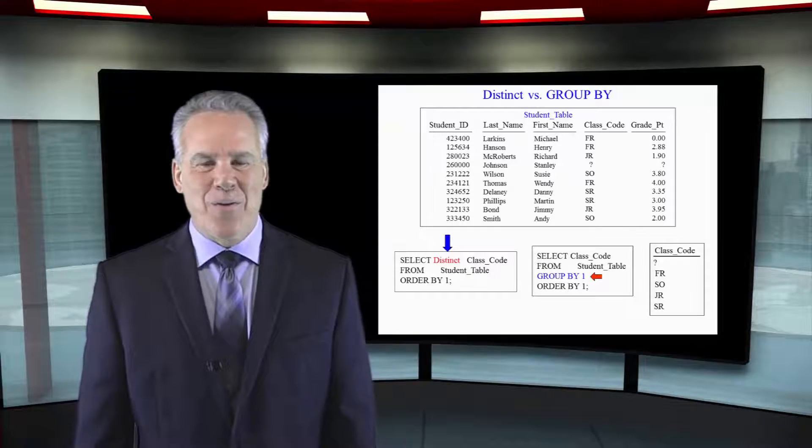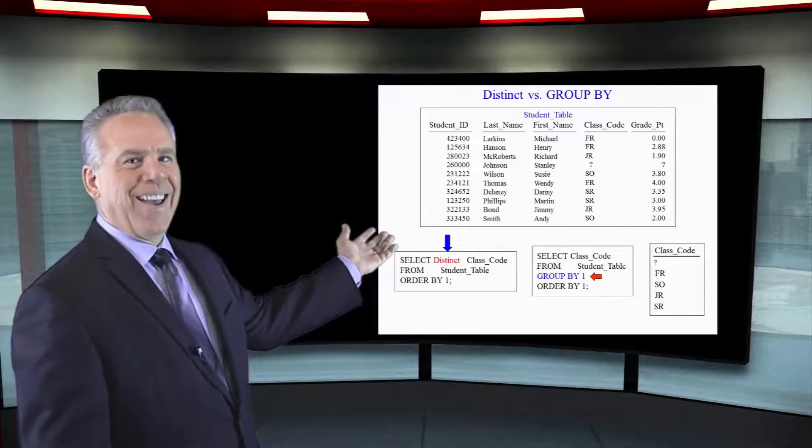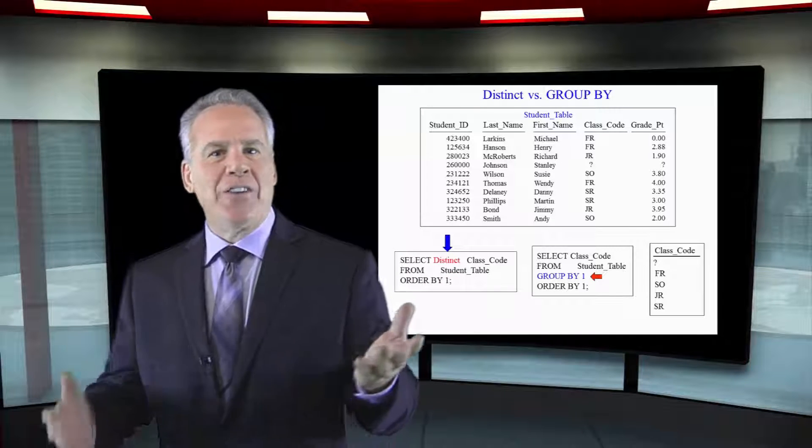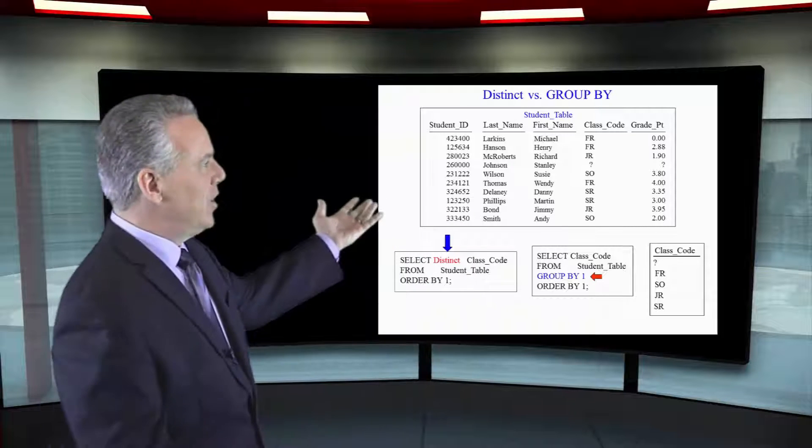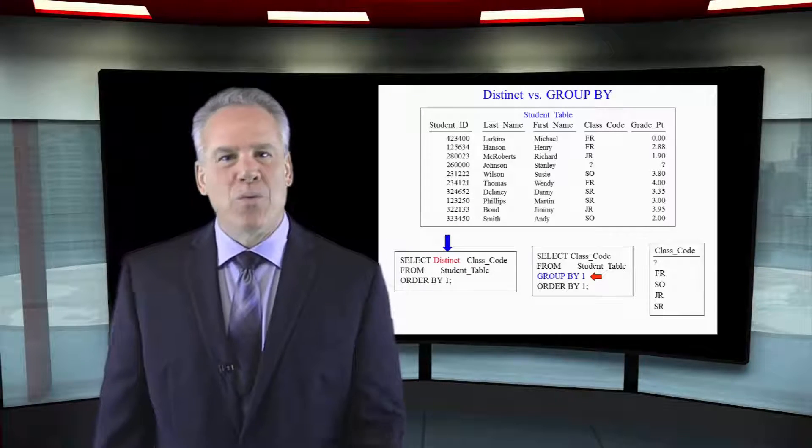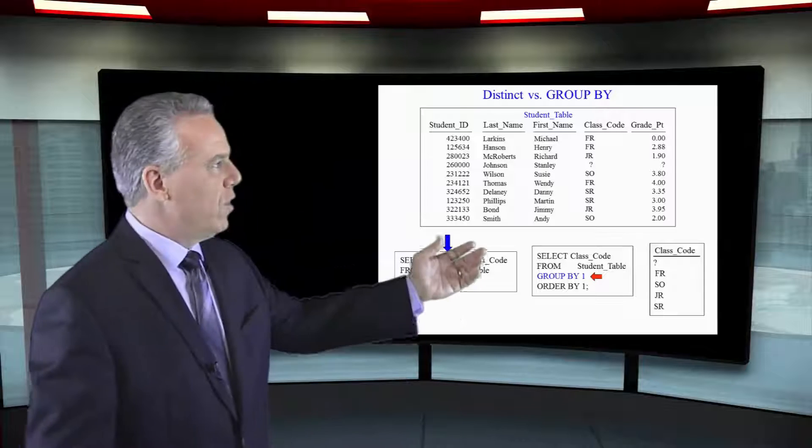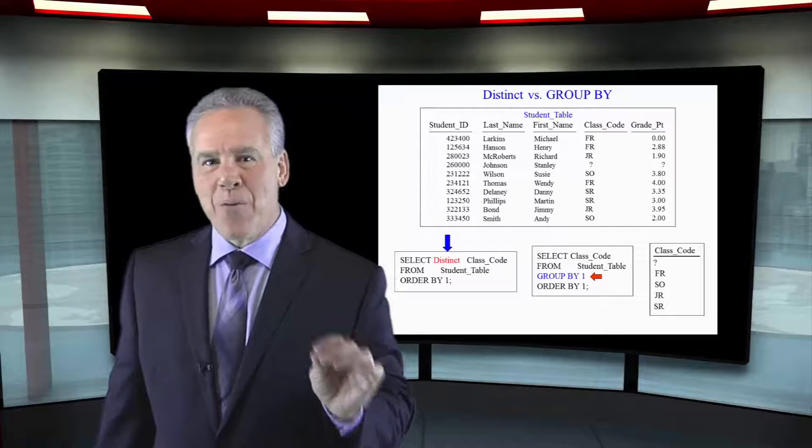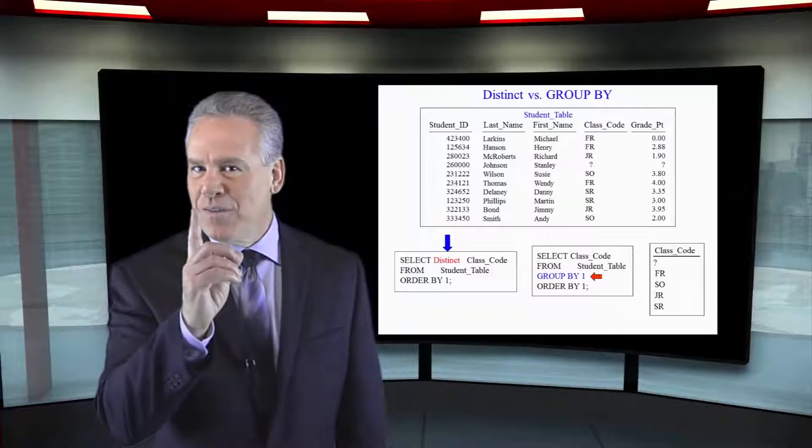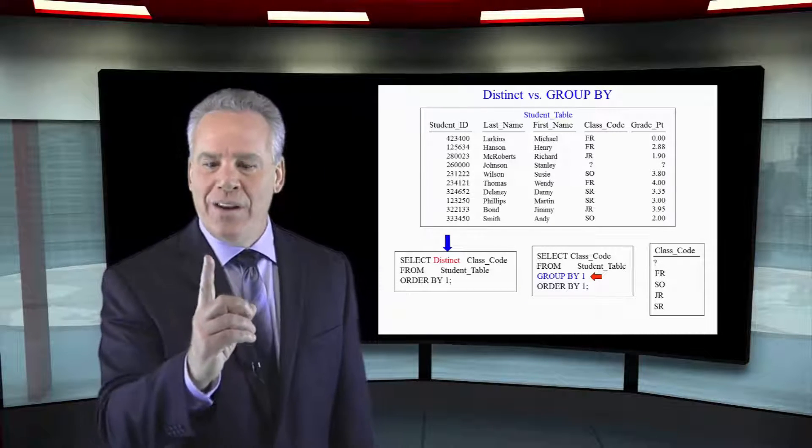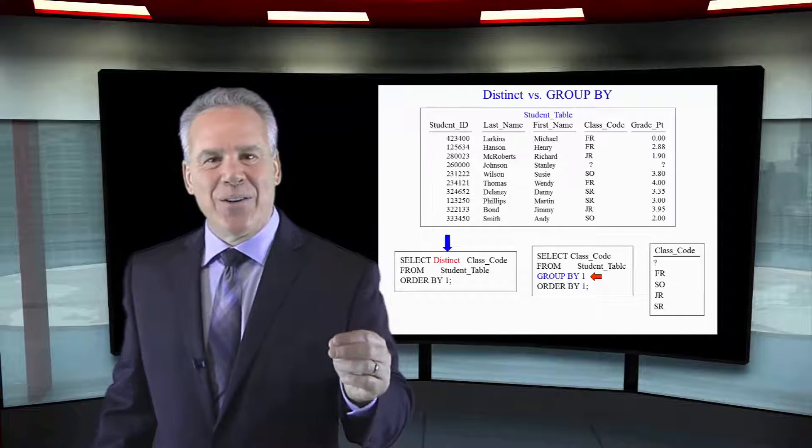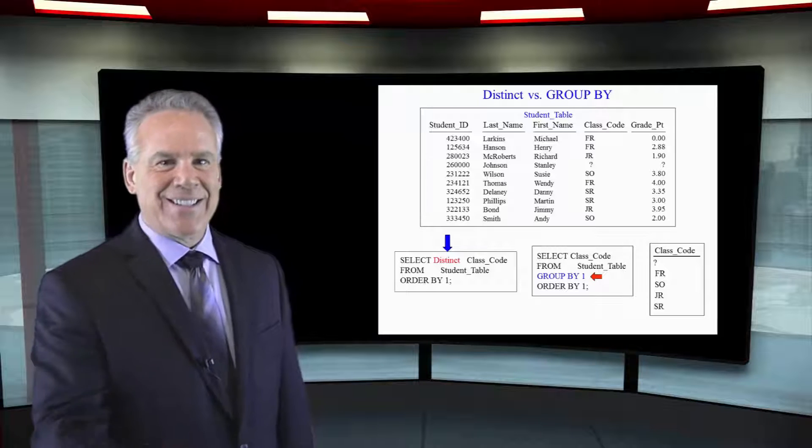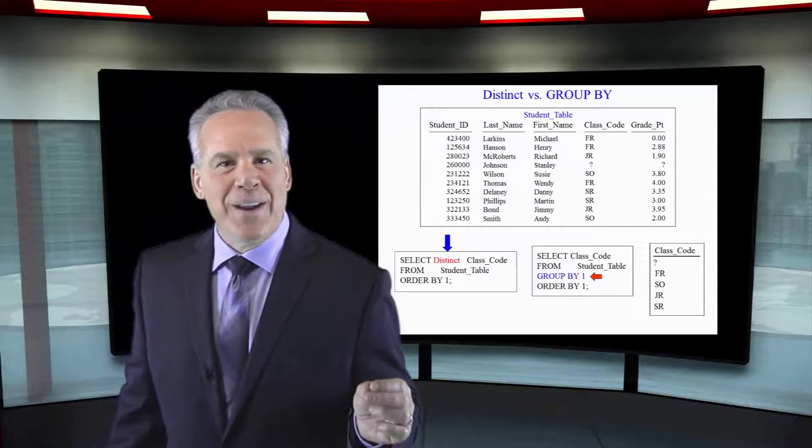I've got two commands here for you: the distinct and the group by. They're equivalent. We just saw how distinct works. It gave us the distinct class codes. Group by will work the same way. Notice over here I say select class code from student table group by one. Since class code is the first column, group by one is perfect. But I could have said group by class code. This is also going to give me a distinct list of those class codes. These are equivalent commands.